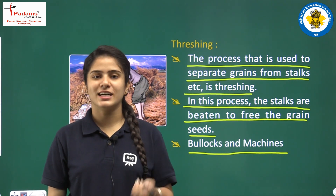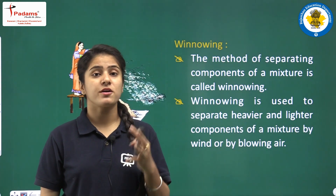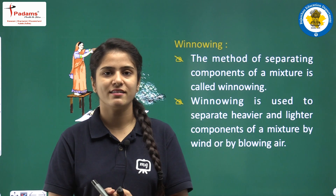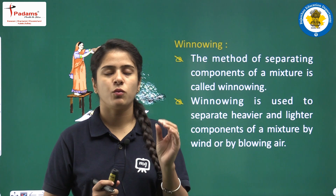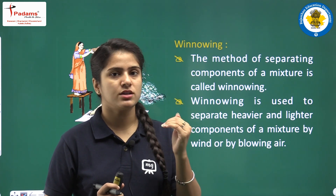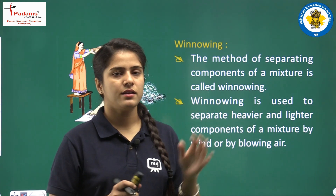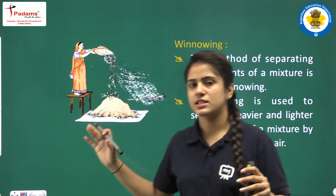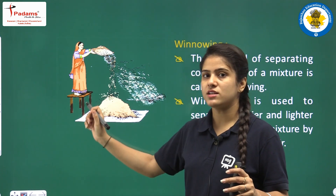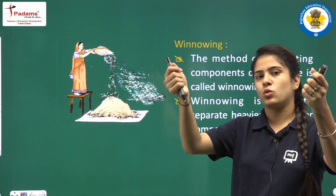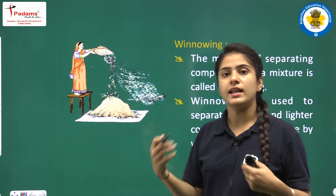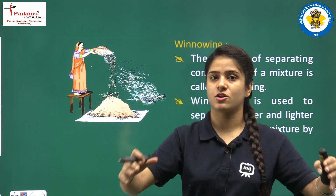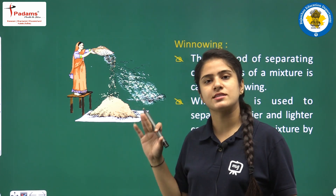The third method is winnowing. In winnowing, we separate a mixture's different components — some are lighter and some are heavier particles. As shown in the picture, a woman is standing on a stool with a sieve, letting the mixture fall downward. The lighter husk particles fly away in the direction of wind, and the heavier particles form a heap on the platform.